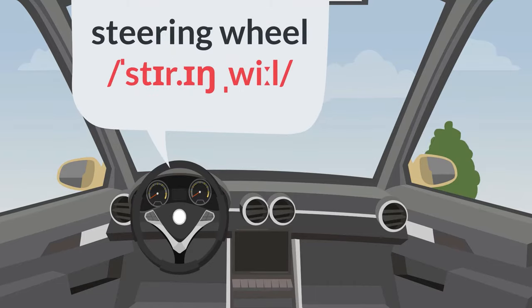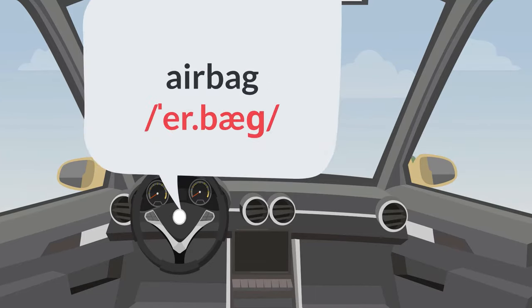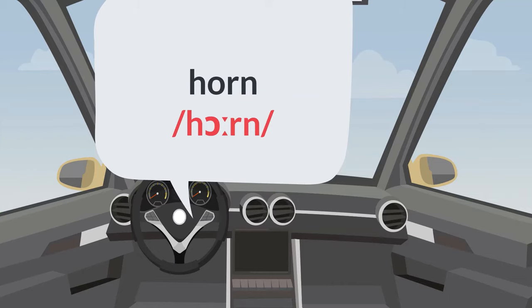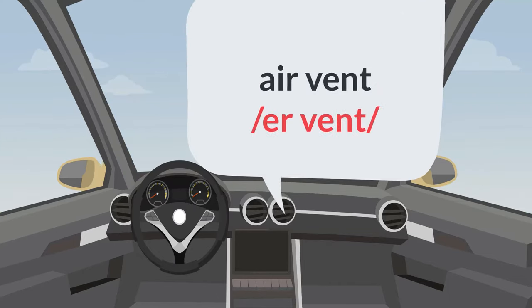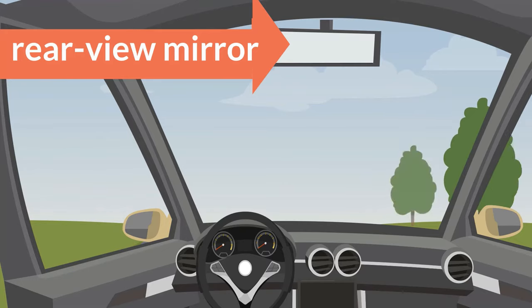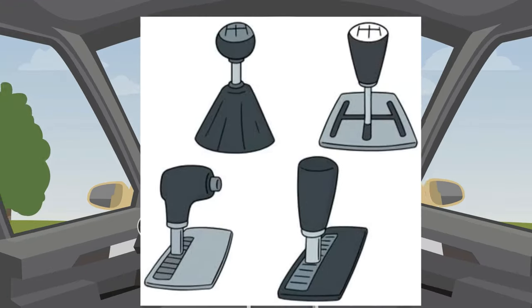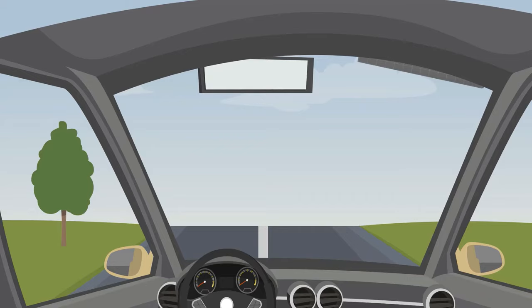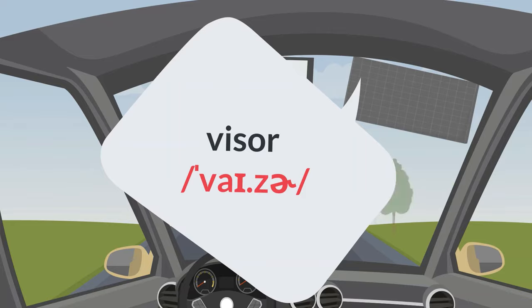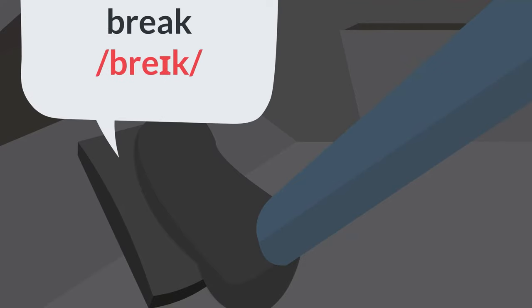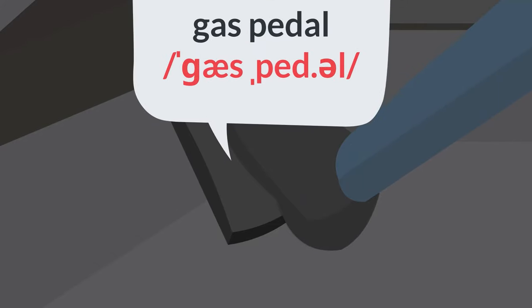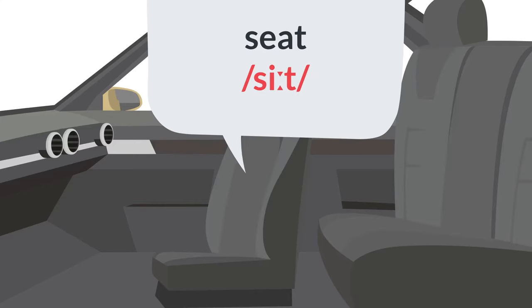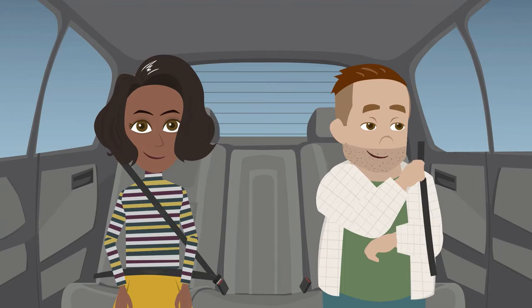Steering wheel. Airbag. Horn. Air vent. Rear-view mirror. Gear shift. Gas pedal. Seat. Seat belt.